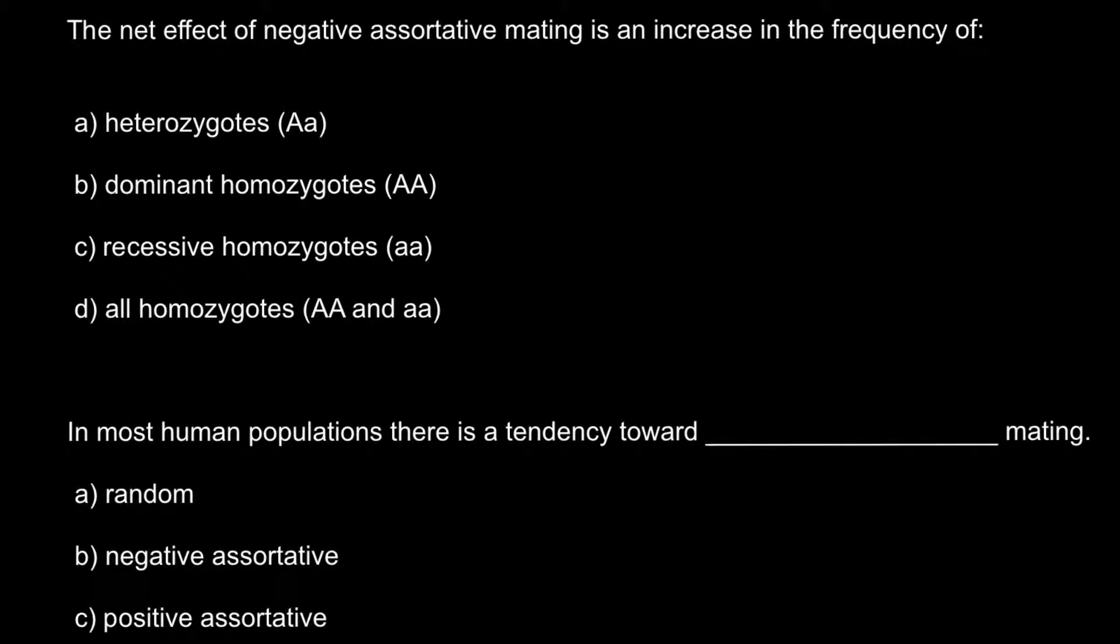And here is the first question. The net effect of negative assortative mating is an increase in the frequency of... and here are four answers to choose from.